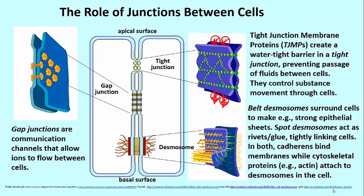Adherence junctions, as I said, these are belt desmosomes and they help to create strong sheets of epithelial cells or endothelial cells that line the blood vessels or your gut, for example.